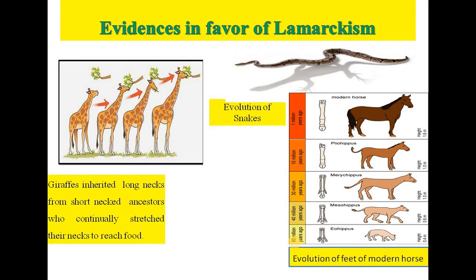The third evidence is the evolution of snakes. According to Lamarck, the ancestors of snakes were limbed and lizard-like and lived in thick jungles. Out of fear of mammals, the snakes started creeping on the jungle floor and living in narrow crevices or burrows. For moving among the vegetation or burrowing in narrow crevices, they stretched their body, which gradually became elongated. The limbs were of no use and were a hindrance in creeping and burrowing, so gradually they disappeared.